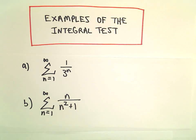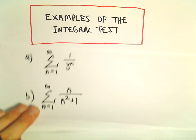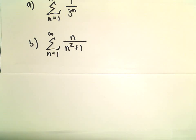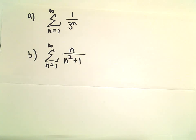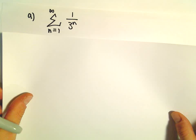All right, in this video, we're going to start looking at some examples related to the integral test. So in part A here, we've got the series from n equals 1 to infinity of 1 over 3 to the n, and we're just going to figure out whether the series converge or diverge.